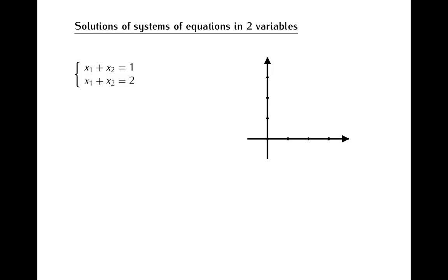Here we have again a system of two equations in two variables. But in this case, even without doing any computations, you can notice that this system cannot possibly have any solutions. The first equation is x1 plus x2 equals 1, and the second equation is almost identical: x1 plus x2 equals 2. If this system would have a solution, we could find numbers x1 and x2 that added together give us 1 to satisfy the first equation, and the very same two numbers added together would have to give us 2 — which is of course a contradiction. So this is a system of equations that has no solutions.